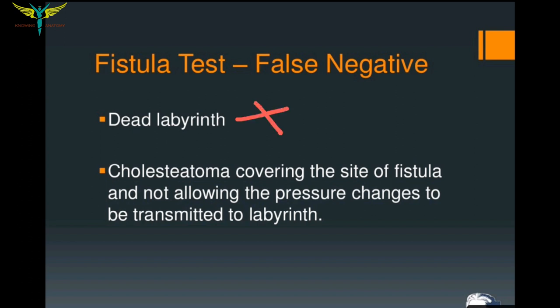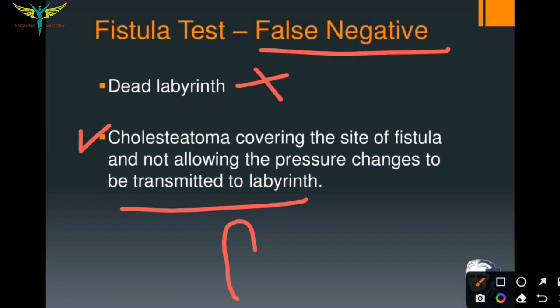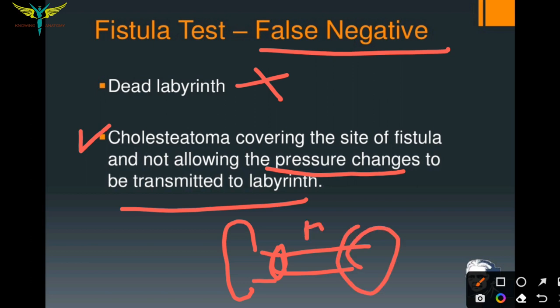The fistula test is absent in the case of a dead labyrinth or when the labyrinth is not functioning at all. The fistula test is false negative in cases of cholesteatoma which covers the site of the fistula and does not allow pressure changes to be transmitted to the labyrinth. Cholesteatoma acts as an obstruction near the tympanic membrane, preventing pressure transmission into the inner ear.